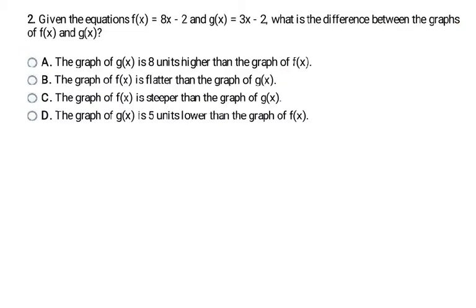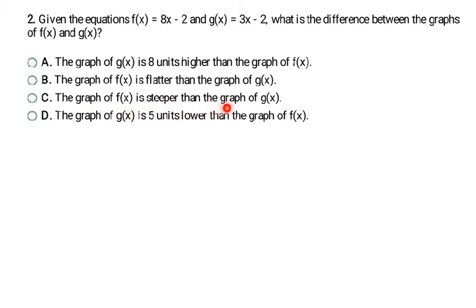In this example, we're asked to compare two different graphs. Given f of x equals 8x minus 2 and g of x equals 3x minus 2, what is the difference between the two graphs? Their y-intercepts are the same — only the slopes differ: 8 versus 3. The higher the slope number, the steeper the line. Since 8 is bigger than 3, f of x is the steeper line. So the answer is C.